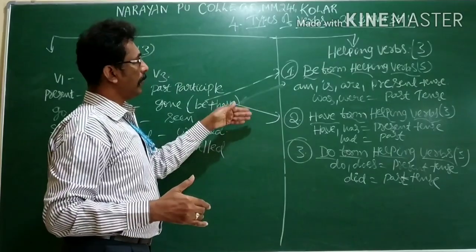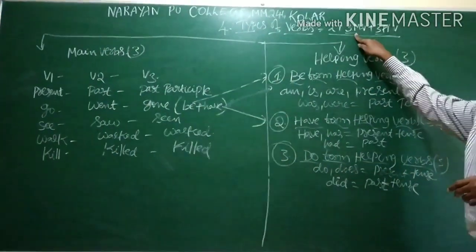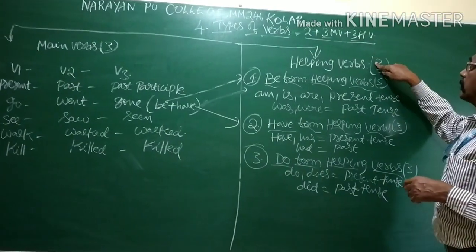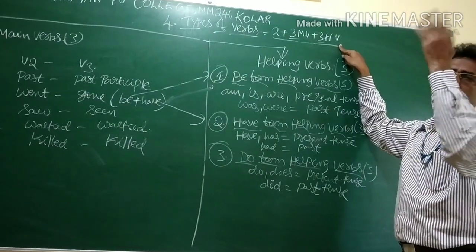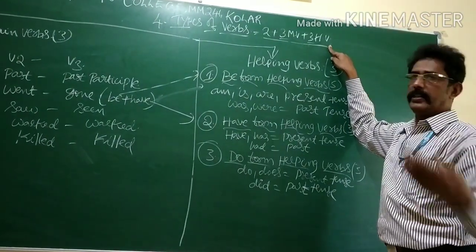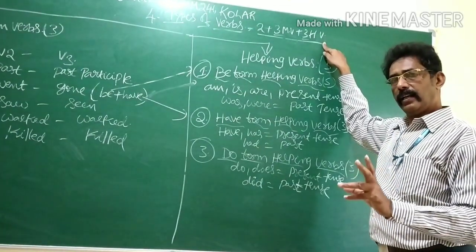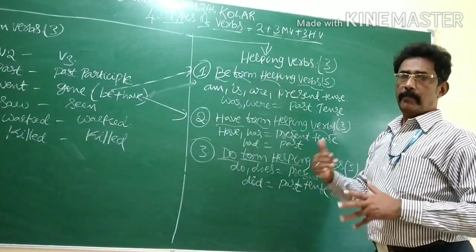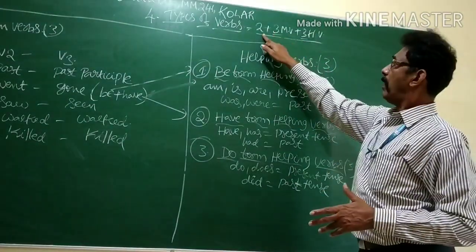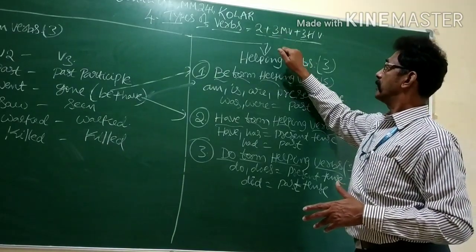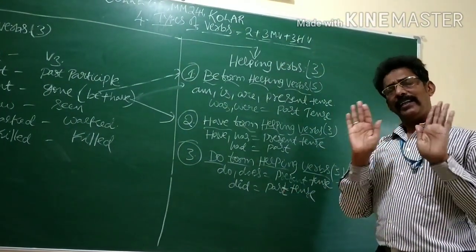How many types of verbs are there? Two types. How many types of helping verbs are there? Three types. It is enough. Don't follow those old standard rules — those are unnecessary. We must learn English verbs in this style. Types of verbs are two, types of main verbs are three, types of helping verbs are three. Remember, it is fine.